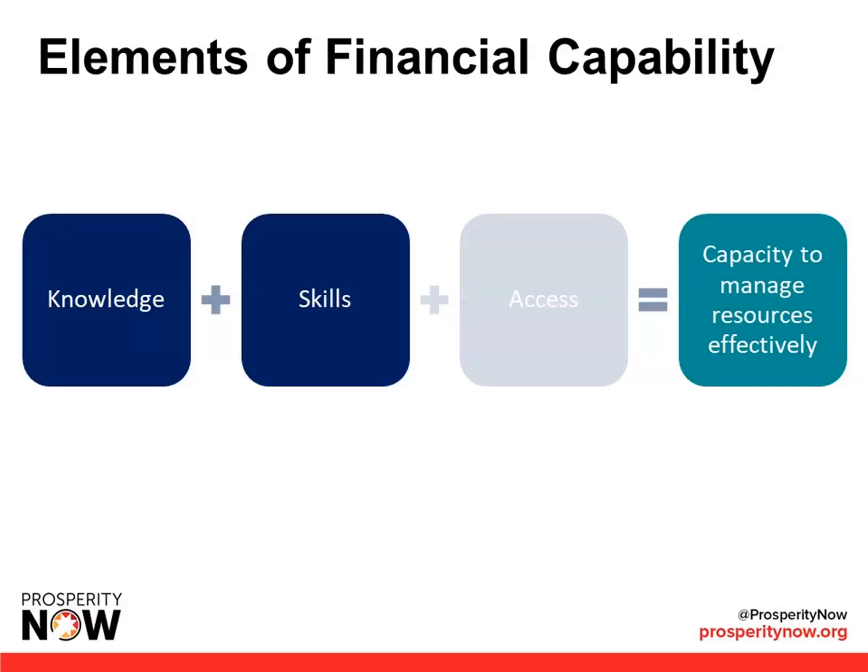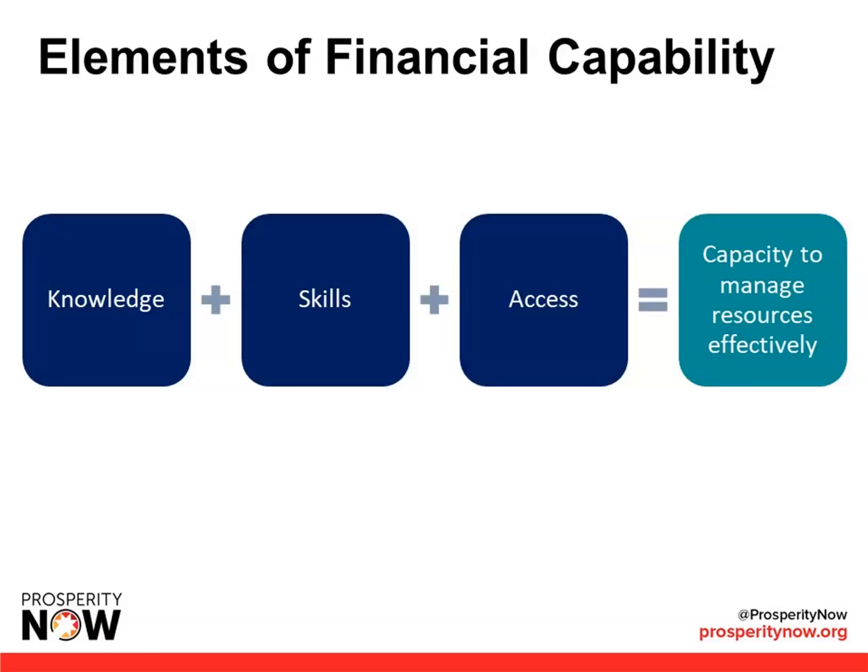The second element of financial capability is skills. To manage financial resources effectively, we need appropriate skills. Returning to the credit example: I might know that making on-time debt payments impacts my credit score, but if I don't have the skill to set up automatic payments or call and negotiate a different due date with my lender, I may be less successful. Lastly, but perhaps most importantly, is access — we need access to quality, safe, and affordable financial products and services. If I don't have access to affordable credit, I enter a vicious cycle of relying on high-cost, often predatory loans that trap me in debt.